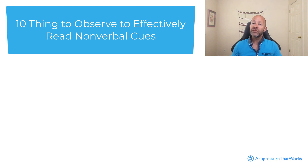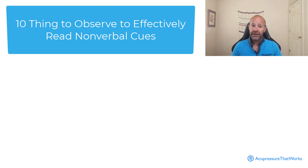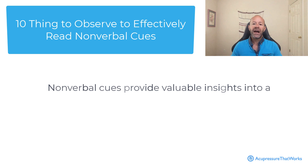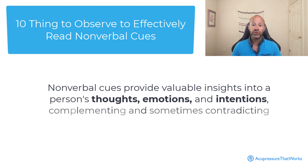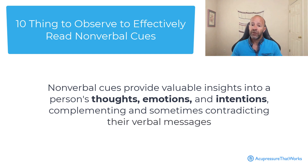Ten things to observe to effectively read nonverbal cues. Reading nonverbal cues involves observing and interpreting the various nonverbal signals that people emit during communication. These cues provide valuable insights into a person's thoughts, emotions and intentions, complementing and sometimes contradicting their verbal messages.